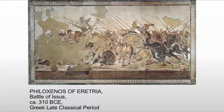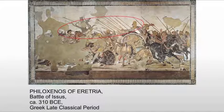What we're seeing here is Alexander looking directly at Darius. Darius is looking back as his troops begin to escape and retreat from the battlefield, almost wishing to stay there, to have that hero's death, even if it's at the hands of Alexander.